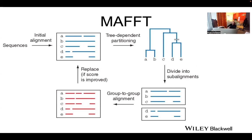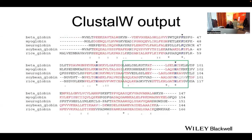MUSCLE does iterative alignment: it starts with an initial alignment, groups sequences, then refines by splitting sub-alignments, realigning, checking if the alignment improves, and iterating to make it better and better. Starting from an initial ClustalW-like alignment, it can shift gaps around to handle them in a better way.